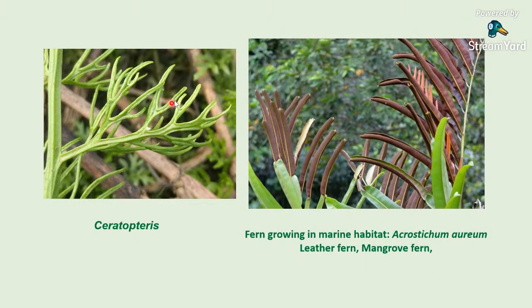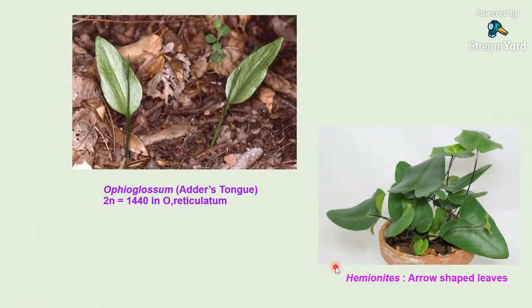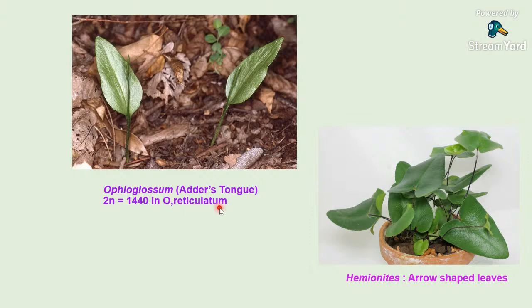Ophioglossum is the adder's tongue fern — a simple-leaved fern. 'Adder' means snake — it appears as if a snake has opened its mouth. It shows the highest chromosome number among the plant kingdom: 2n = 1440 in Ophioglossum reticulatum. Hemionitis has arrowhead-shaped leaves with sporangia on the undersurface. Plants were collected from Chandrabhadra Sanctuary near the city, in Rajmahal area of eastern India and Jharkhand, and also from Goa. PG students also visited Goa and collected a large number of plants including Lygodium.